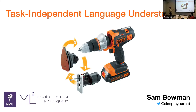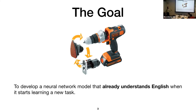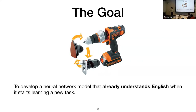A lot of this was driven by work by people much more talented than me. I'll be talking about this idea of task-independent language understanding. The goal is to develop a general-purpose neural network encoder for text that makes it possible to solve any new language understanding task using only enough training data to define the possible outputs — all your training data needs to do is tell you how this task is different from some other task. Another way to think of this: we want a model that already understands English before we start training it on any particular task. Like a power drill where you take the expensive motor and fancy battery and swap out different tools on the other end.